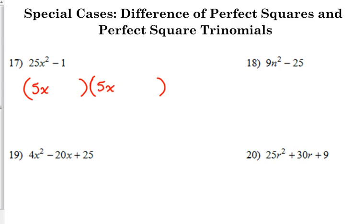5 times 5 gives us 25. 1 times 1 gives us 1. We'll put a plus in the first, a minus in the second. The order of that really doesn't matter. I just traditionally do plus and then minus.